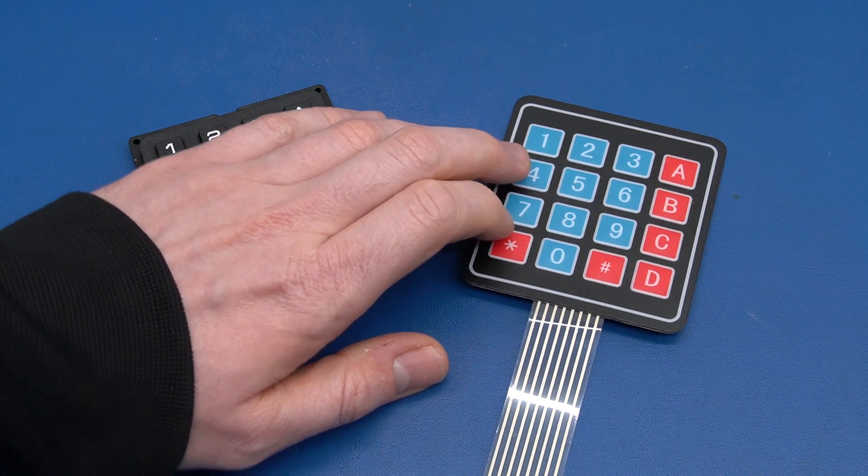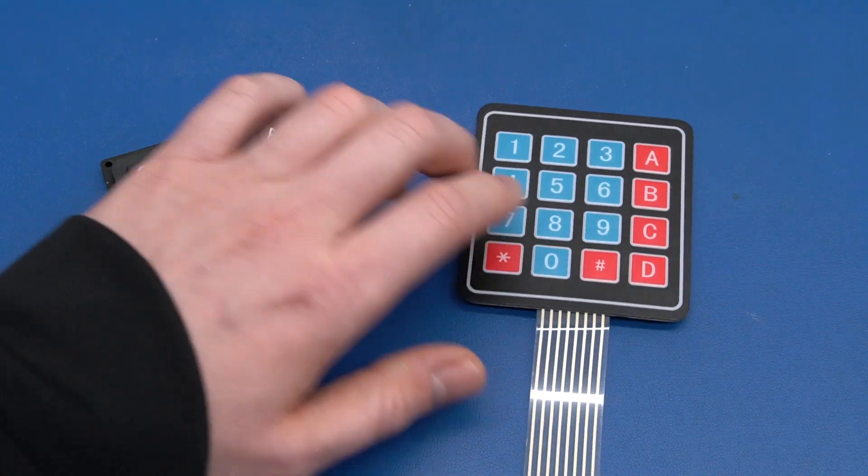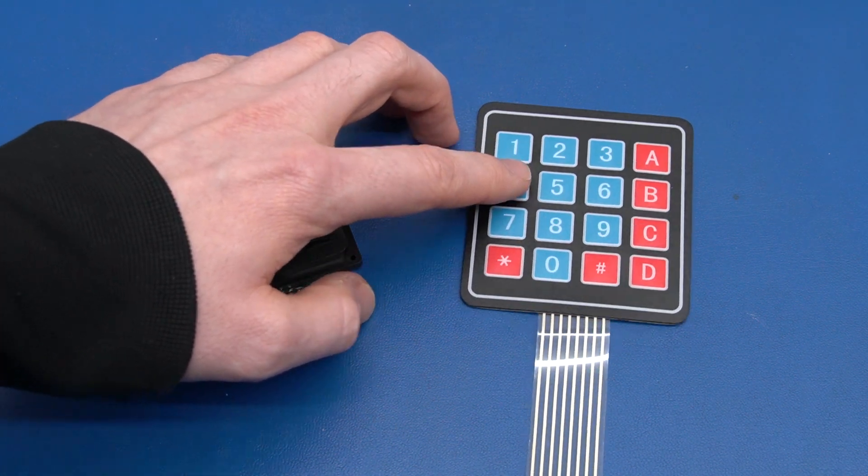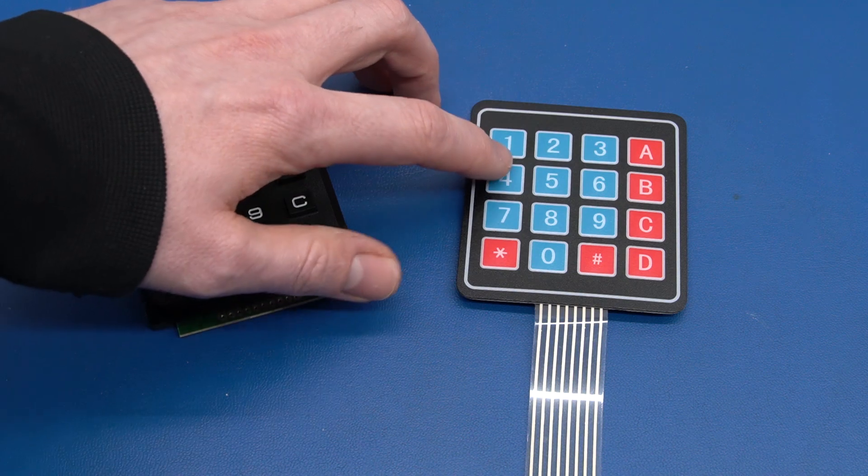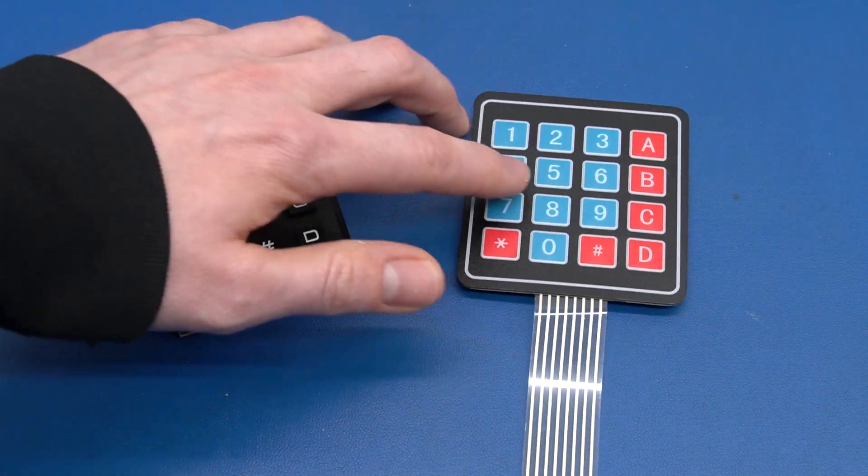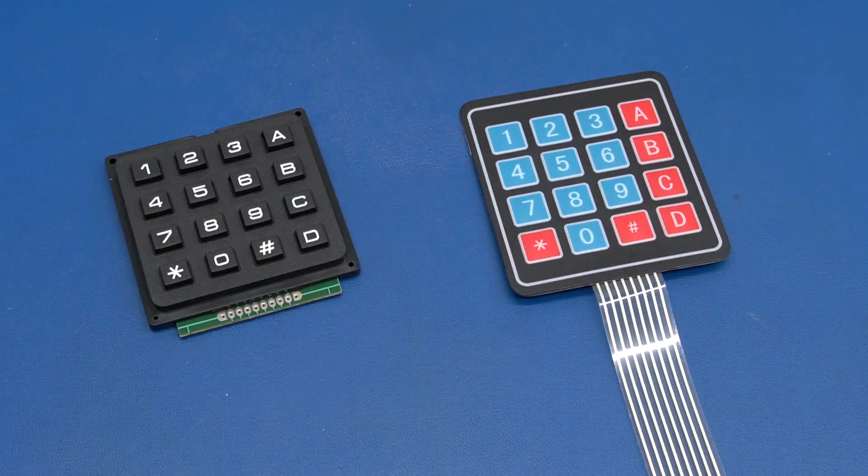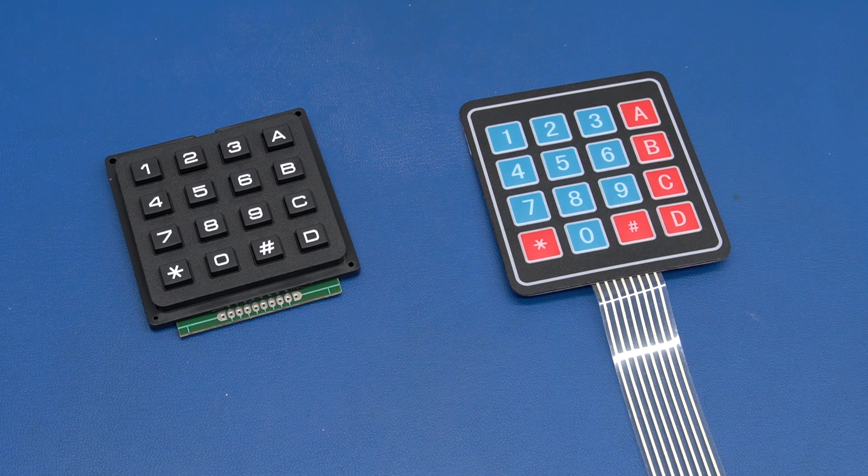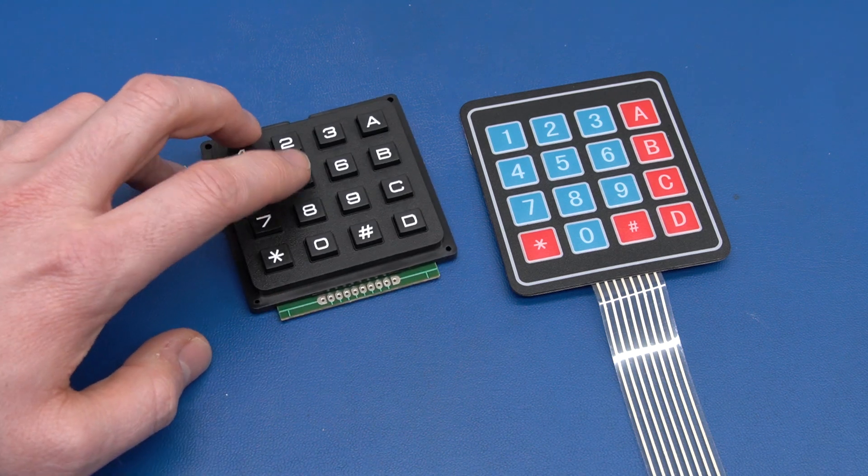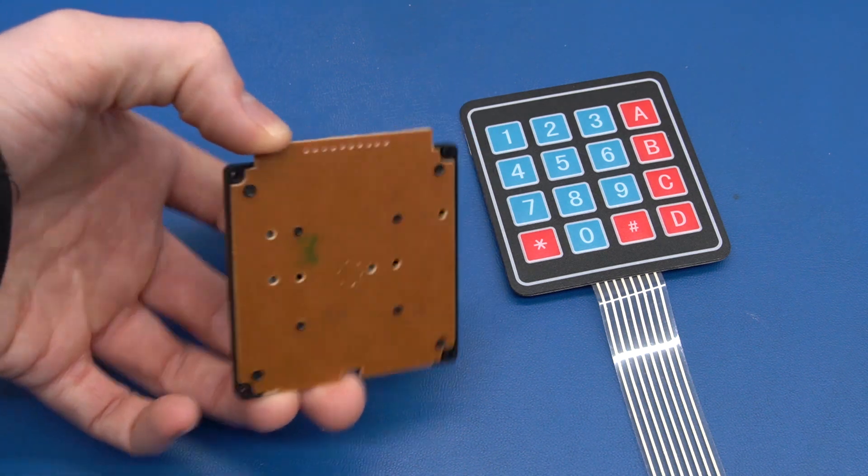But if you try to press say 4 and 8 at the same time, you have no way of telling whether you pressed 5 and 7 or 4 and 8 because you're connecting these two rows and these two columns together. So your safest bet is really to only accept single key presses if you deal with a matrix like this.